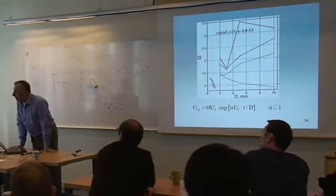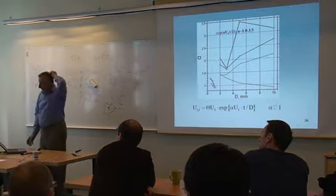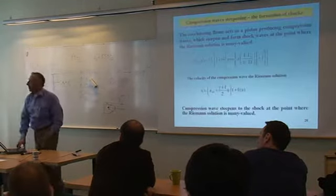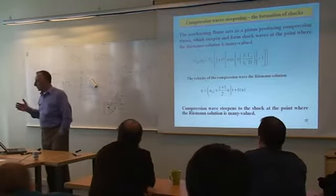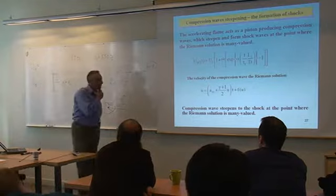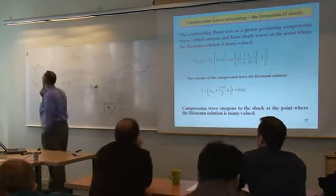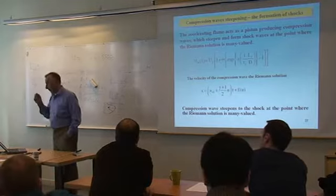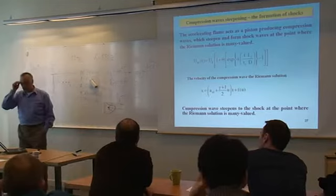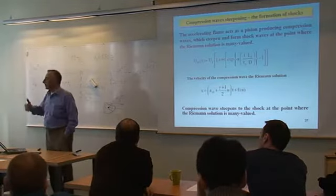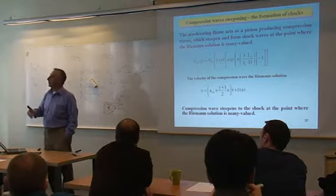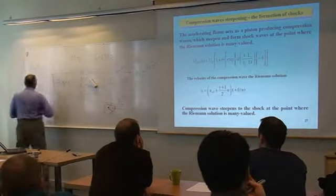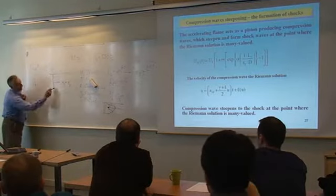The flame acceleration is not simply faster or slower for different channel widths — it exhibits different dynamics. The acceleration is quite similar for channel widths larger than some critical value. Below that critical value, when a parabolic velocity profile forms almost immediately from the very beginning, there is exponential growth of velocity all the way to detonation. Above that critical value, there is a two-stage dynamic before transition.